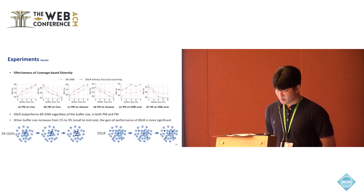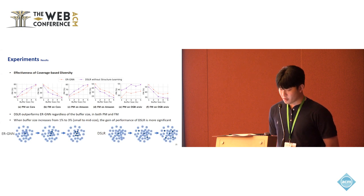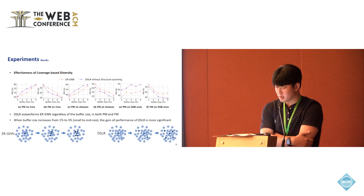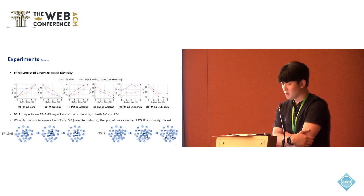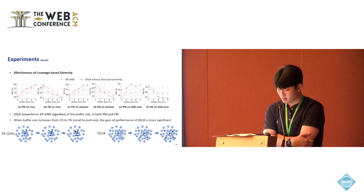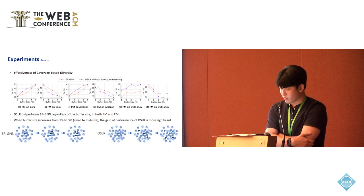And to examine the effectiveness of the CD module, we compared ERGNN with DSLR without Structural Learning. Note that DSLR without the CD and Structural Learning modules is identical to ERGNN. As illustrated, DSLR outperforms ERGNN regardless of the buffer size in both PM and FM. And when the buffer size increases from 1% to 3%, the gain of performance of DSLR is more significant. And as illustrated below, DSLR can cover the broad region with smaller buffer size.